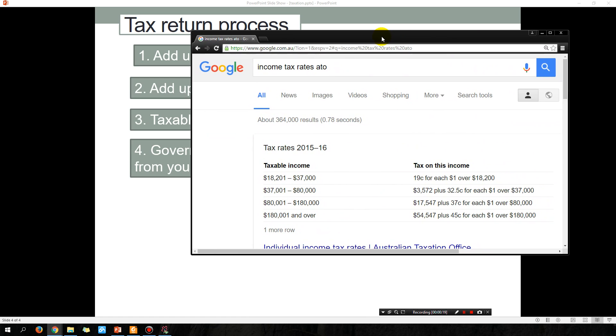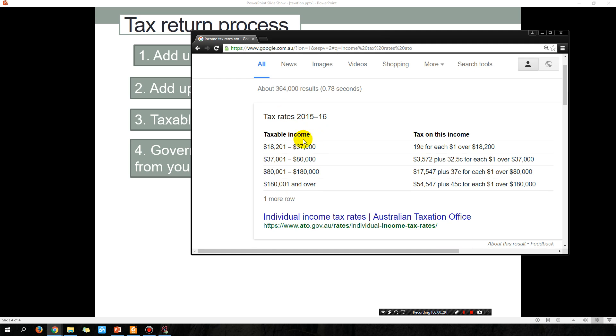So if you do a Google search on income tax rates ATO, which is the Australian tax office, you will see that the tax that you have to pay depends on your taxable income. So if your taxable income is between a certain range, then the tax you have to pay is calculated differently.